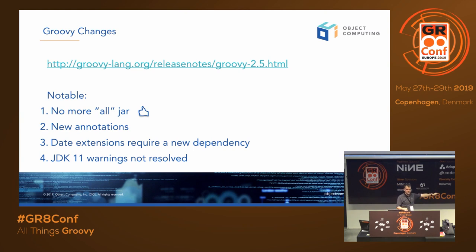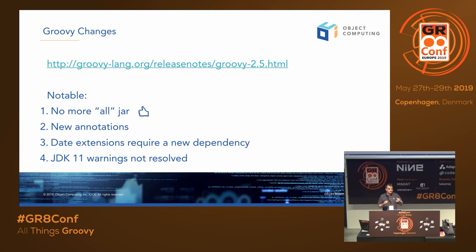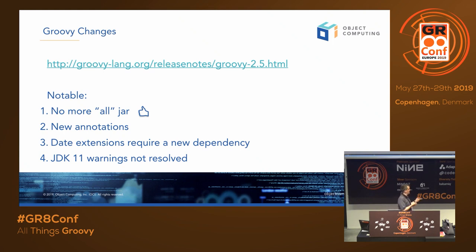Grails 3 was using Groovy 2.4. In Groovy 2.5, there is no more 'all' JAR, which is good because it was causing issues with transitive dependencies. There's a way to bring all the JARs with a BOM-like approach. There might be applications where you need to bring an extra Groovy dependency — especially if you're working with dates, you may need to bring one. Groovy 2.5 also brings nice features: lots of new annotations and AST transformations. Check them out because they simplify code a lot.